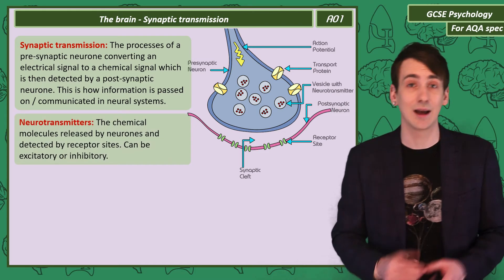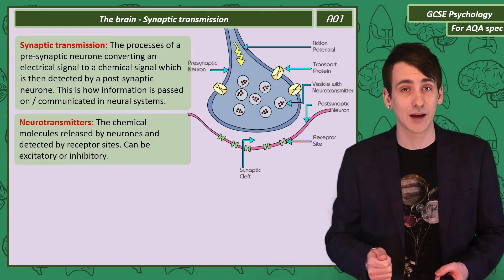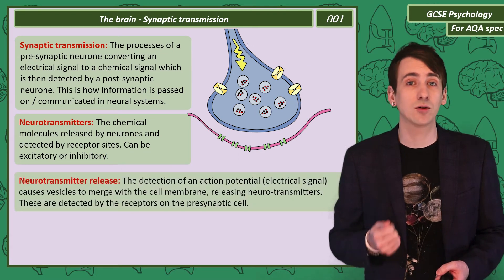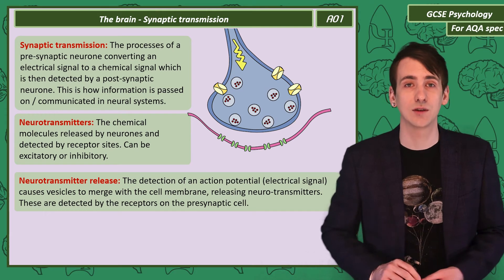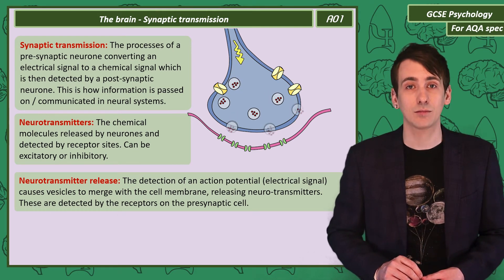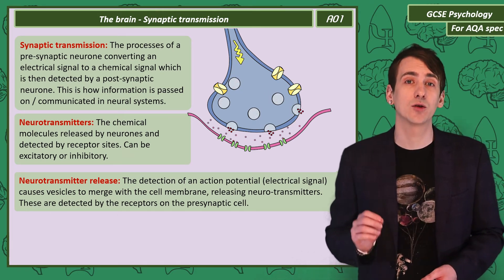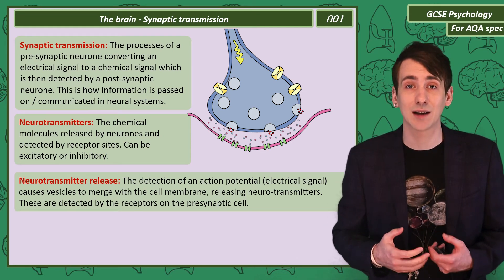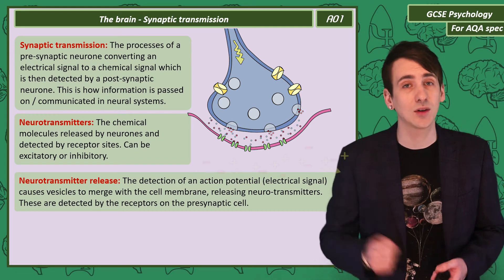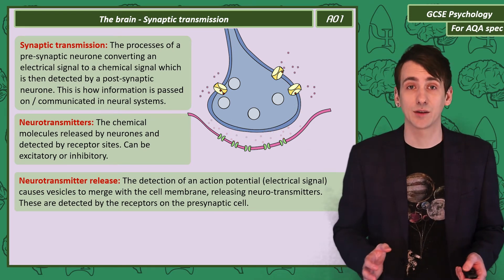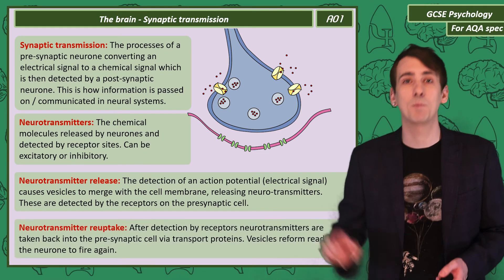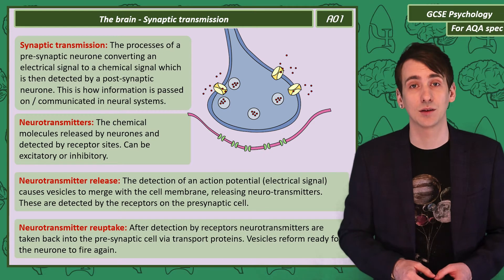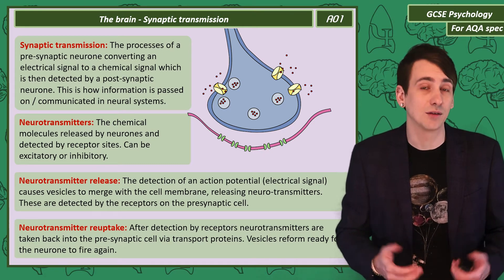Neurotransmitters can be excitatory or inhibitory — more on that in a second. Neurotransmitters are released when the electrical signal, known as an action potential, reaches the synapse. Vesicles containing neurotransmitters then merge with the cell wall and release the neurotransmitters so they can be detected by the receptors on the postsynaptic cell. The neurotransmitters then need to be taken back into the presynaptic cell via transport proteins, so that the synapse is ready to fire again.